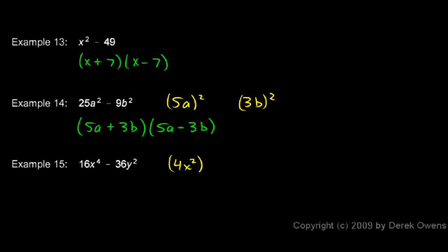4x² - if I square that, this squared applies to the 4, giving me the 16, and it applies to the x². x² squared gives me this x to the 4th. So 16x to the 4th is indeed something squared.